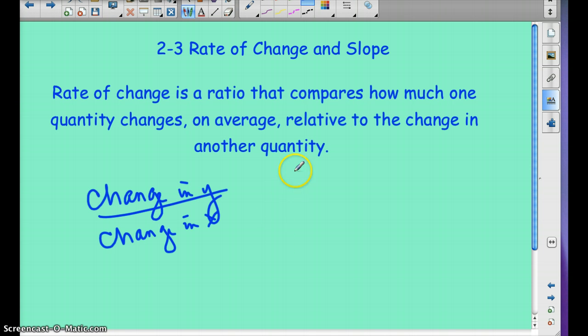And so another way to write change in something is using the delta symbol, a triangle. So you might see me use this just because I don't like writing the change all the time. So change in y over change in x. The change of one quantity relative to the change of the other quantity. And remember x is the independent variable and y is dependent. So y depends on what happens to x.